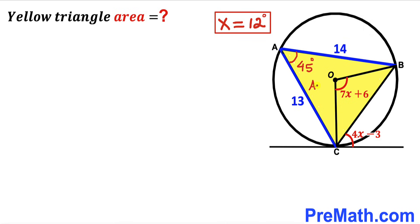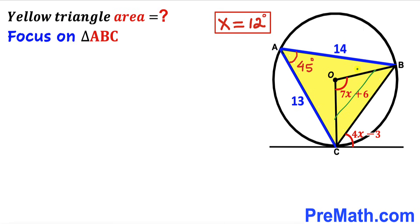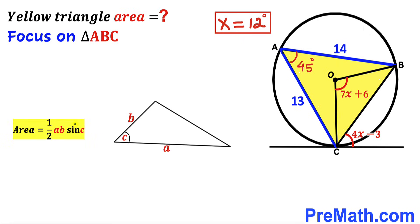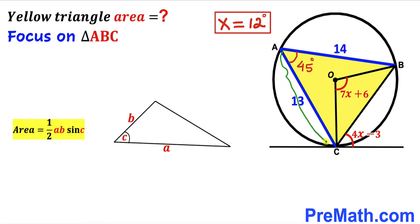Now our task is to calculate the area of this yellow shaded triangle ABC. Recalling the area of a triangle formula: area equals one half times side a times side b times sine of the included angle C. In our triangle we have two known side lengths of 13 and 14, and 45 degrees is the angle between these two sides.